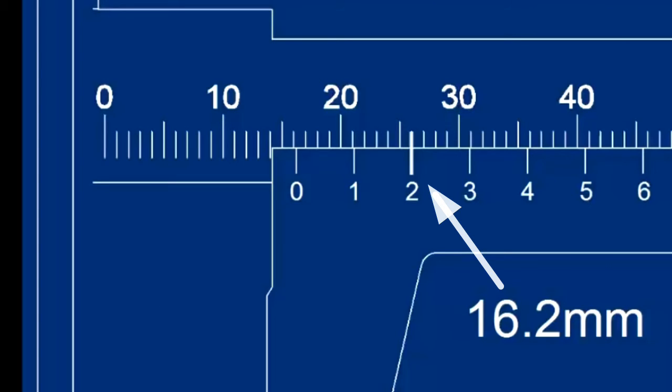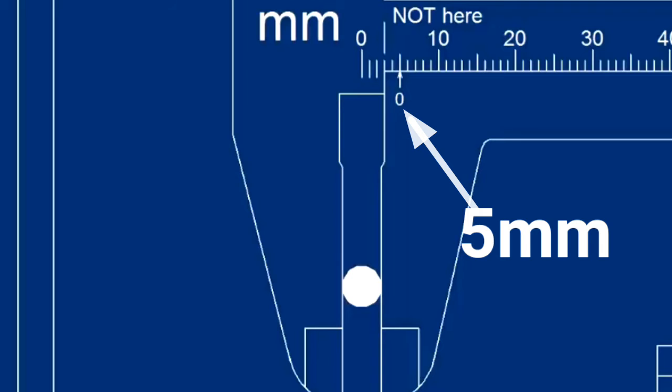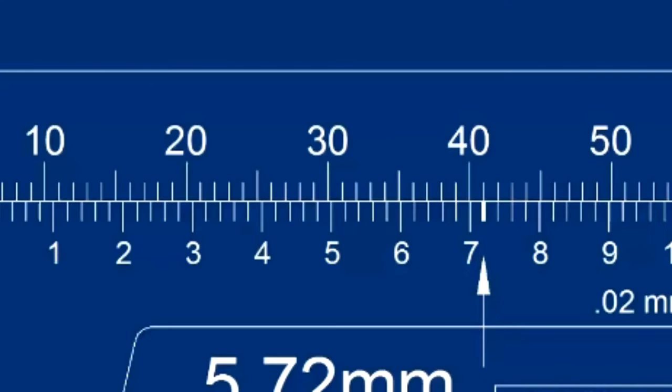Here the MSR is 16 and the VSR is 0.2. Here 0.5 mm MSR, 5.72 mm total, 0.72 in vernier scale. Number of divisions in vernier scale multiplied by least count. Here the least count is 0.02 mm.